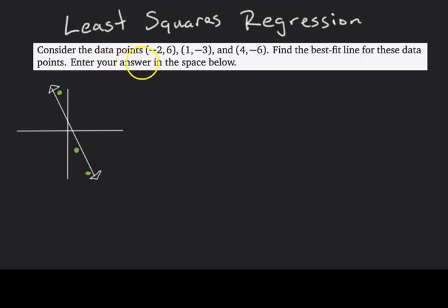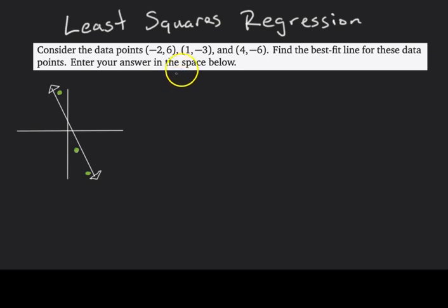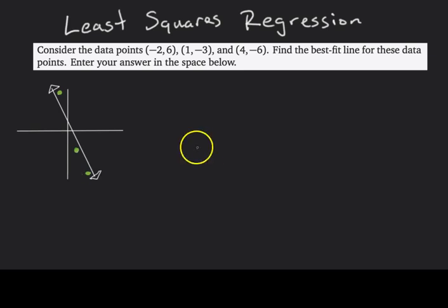I have this least squares regression problem taken straight from the last question on the final exam of fall 2018. It's a very straightforward question: consider the data points given, find the best fit line for these data points, and enter your answer in the space below. As long as you know the process for doing these kinds of problems, this is like free points. I've sketched out the problem — we have three data points at (-2, 6), (1, -3), and (4, -6), and our goal is to find the equation for the line of best fit.